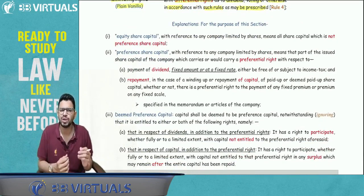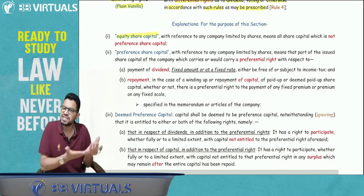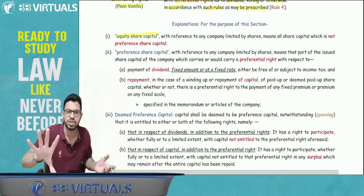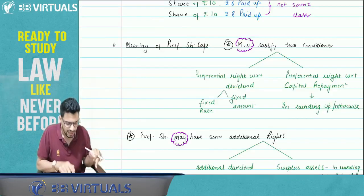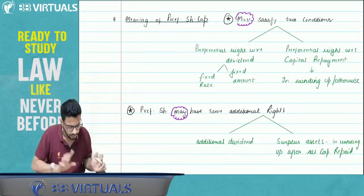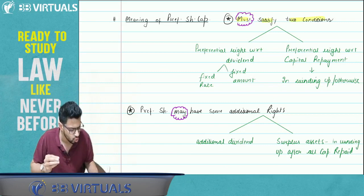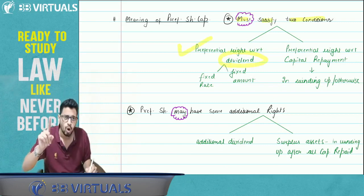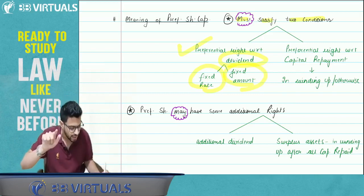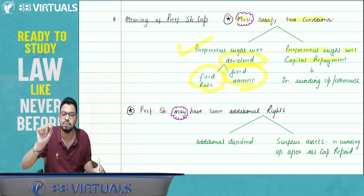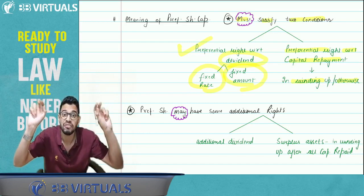Equity share capital means that which is not preference share capital. So let's define preference share capital — whatever is not preference share capital is equity share capital. Preference share capital must satisfy two conditions. First, it must have a preferential right with respect to dividend — either in the form of a fixed rate (e.g., 6%) or a fixed amount. Second, it has a preferential right with respect to capital repayment in case of winding up or otherwise. That is why the word 'preference' is used.